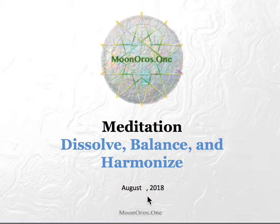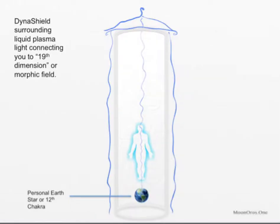We're going to be starting with this symbol, which is the DynaShield that we call it. The top point here is anchored to approximately what we would consider the 19th dimension as we've entered a new harmonic universe.